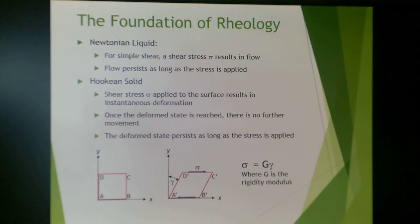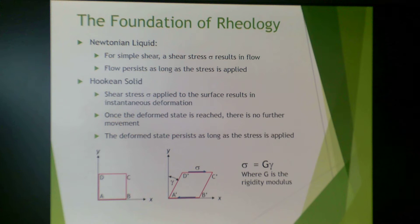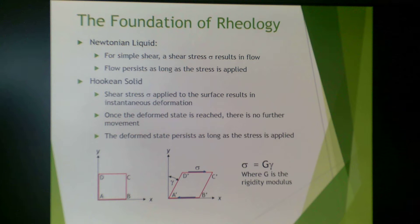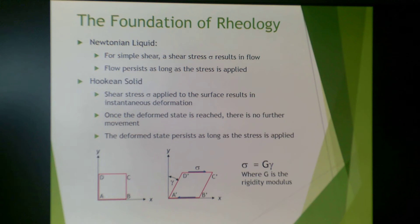We have now established a Newtonian fluid and a Hookean solid. For simple shear in a Newtonian liquid, a shear stress sigma results in flow, and flow persists as long as the stress is applied. For a Hookean solid, a shear stress sigma applied to the surface results in an instantaneous deformation. Once the deformed state is reached, there is no further movement, and that deformed state persists as long as the stress is applied. The relationship in a Hookean solid is sigma equals G times gamma, where G is the rigidity modulus of the material.